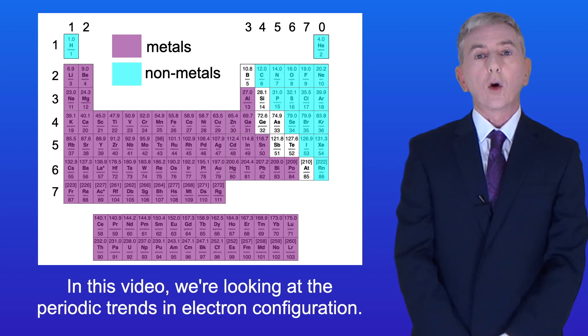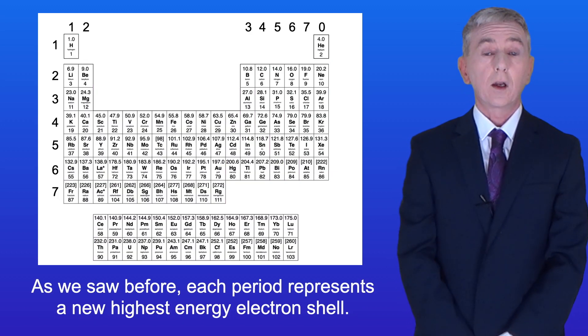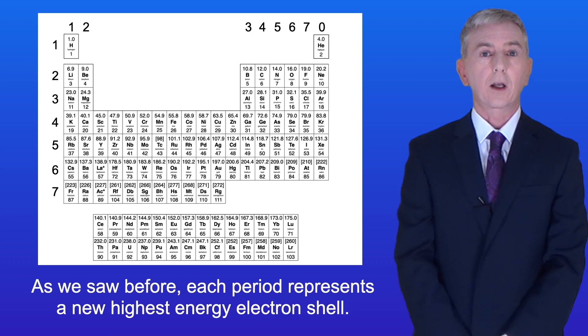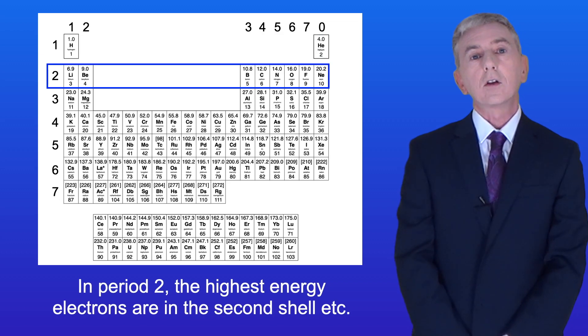In this video we're looking at the periodic trends in electron configuration. As we saw before, each period represents a new highest energy electron shell. In period 1, the highest energy electrons are in the first shell. In period 2, the highest energy electrons are in the second shell, etc.